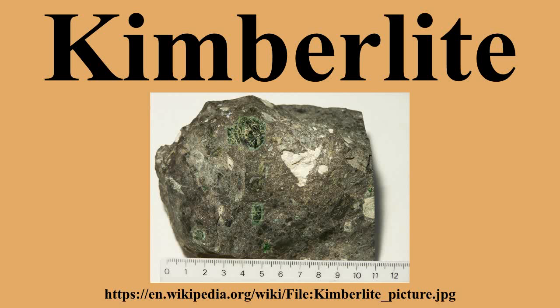Group 1 kimberlites exhibit a distinctive inequigranular texture caused by macrocrystic to megacrystic phenocrysts of olivine, pyrope, chromium diopside, magnesium ilmenite, and phlogopite in a fine to medium grained groundmass. The groundmass mineralogy, which more closely resembles the true composition of the igneous rock, is dominated by carbonate and significant amounts of forsteritic olivine, with lesser amounts of pyrope garnet, chromium diopside, magnesium ilmenite, and spinel.